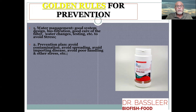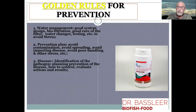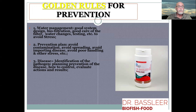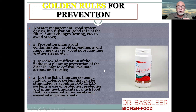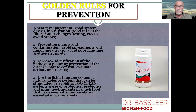Golden rules for prevention: good water management — a good system, good filtration, good care, proper water changes and testing. Make a prevention plan: avoid contamination, avoid spreading, avoid importing diseases, avoid poor handling and other stress. Try to identify the pathogens — if your fish have heavy respiration possibly indicating gill flukes, take a gill scraping and make a proper identification. Think about prevention with good food to control disease using the immune system as a natural defense, and avoid over-clean systems which do not teach the immune system to work properly.